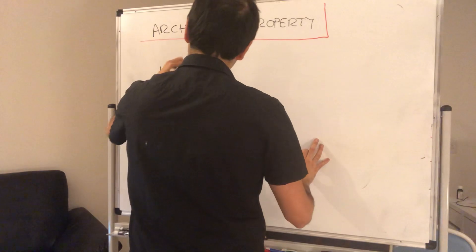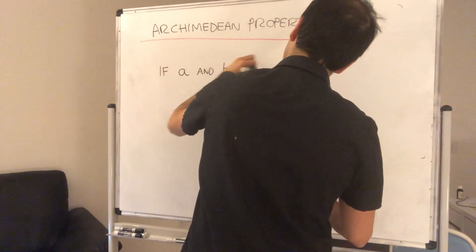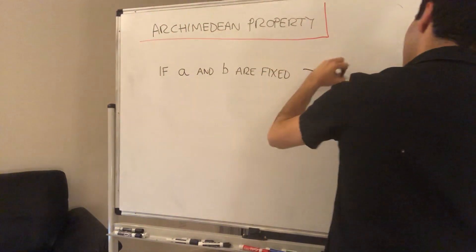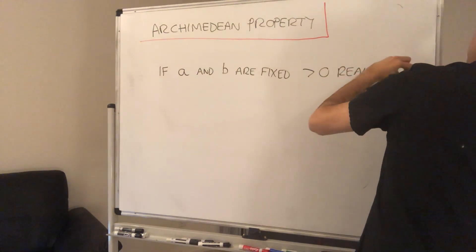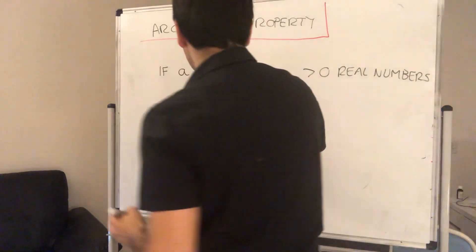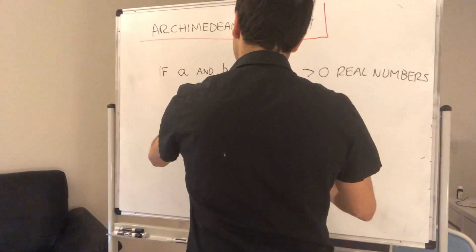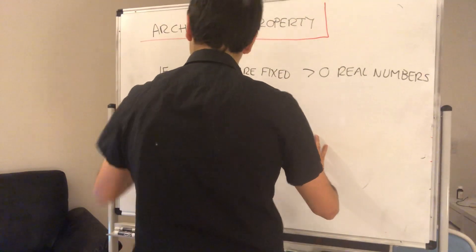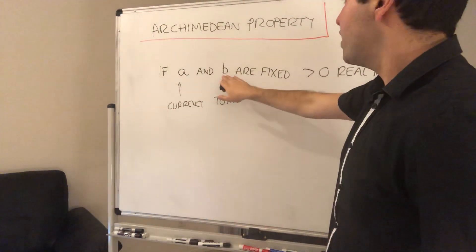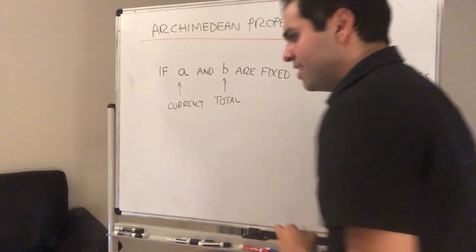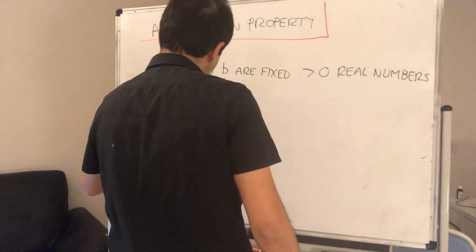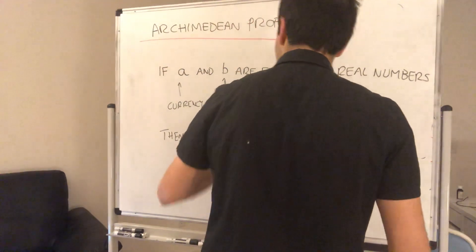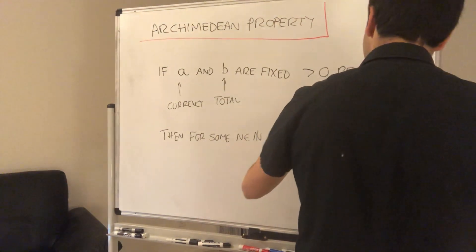So if A and B are fixed positive real numbers - think of B as your total and A as your currency - then for some natural number N, we have that NA is greater than B.